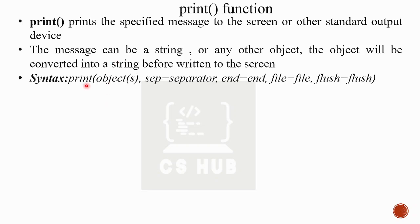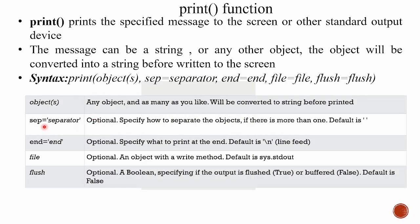Let's look at the syntax: print(objects, sep=separator, end=end, file=file, flush=flush). There are a few optional parameters — objects, sep (separated), end, file, and flush. Step is equal to separated, which is a concept for how objects are separated. End specifies what is appended after printing.